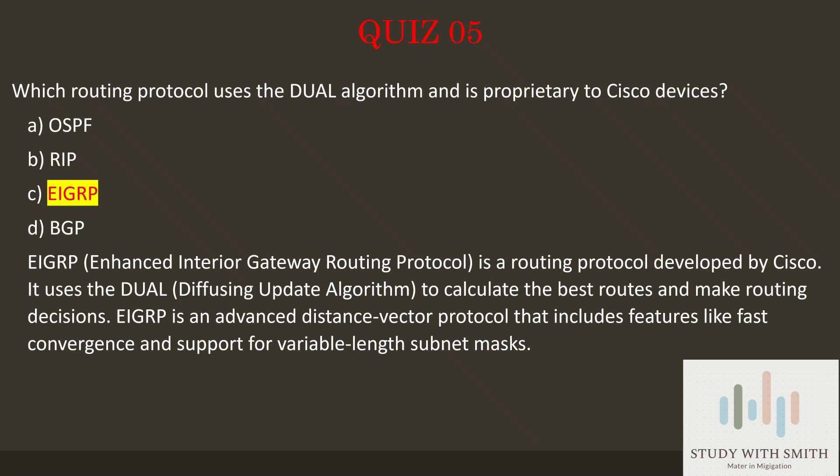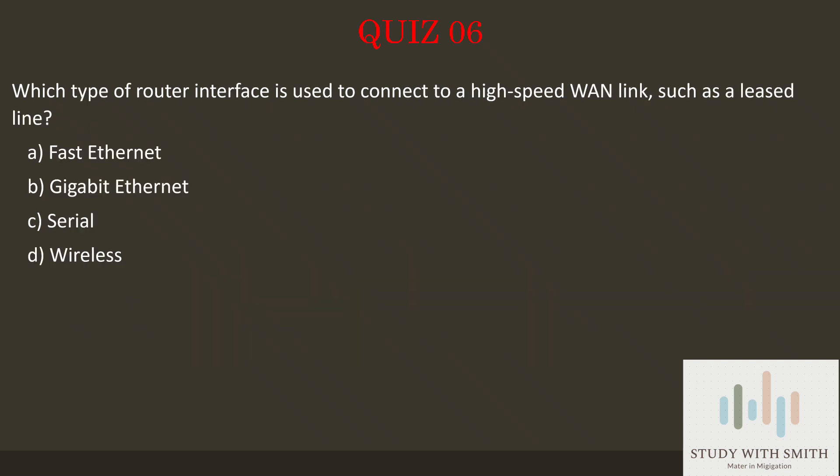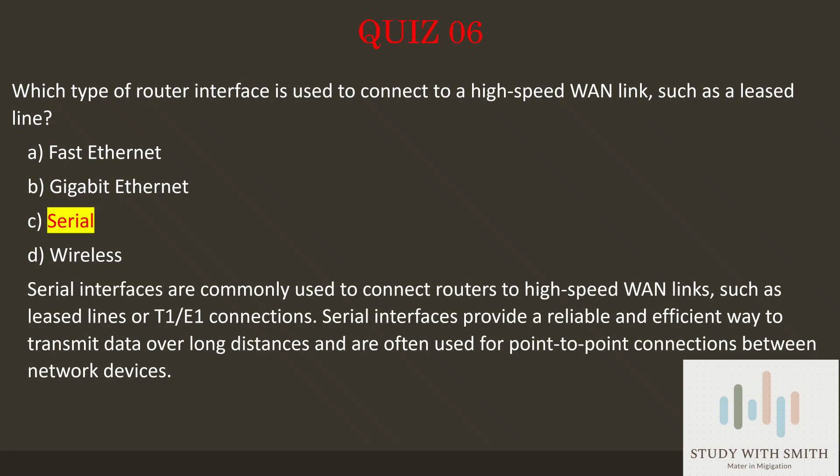Question 6: Which type of router interface is used to connect to a high-speed WAN link, such as a leased line? The answer is C: Serial. Serial interfaces are commonly used to connect routers to high-speed WAN links such as leased lines or T1/E1 connections. Serial interfaces provide a reliable and efficient way to transmit data over long distances and are often used for point-to-point connections between network devices.